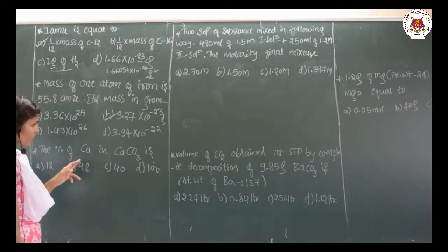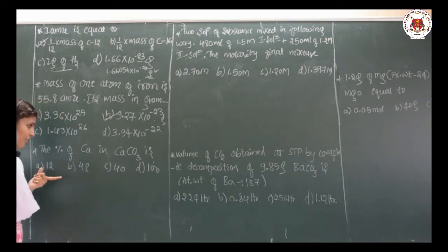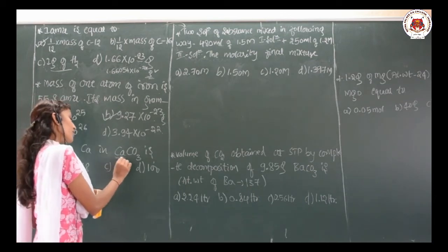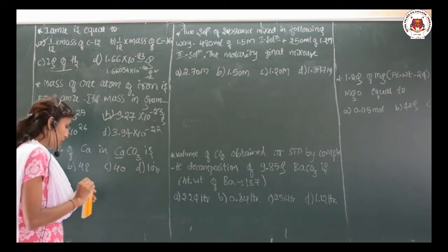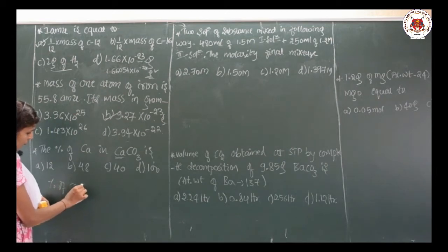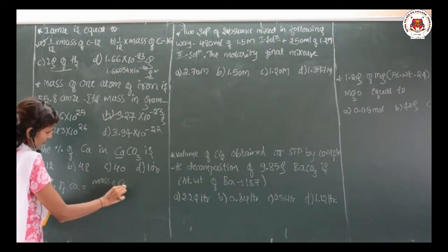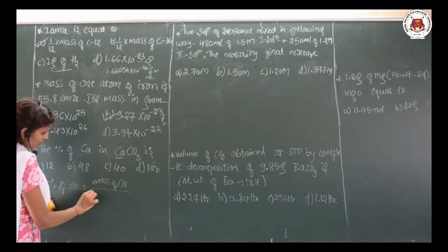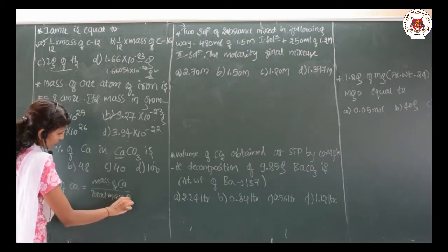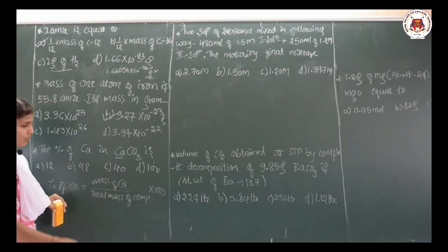The percentage of calcium in calcium carbonate is — this is a question on percentage composition. You need to calculate the percentage of calcium in calcium carbonate. In order to find the percentage of calcium, the formula is: mass of calcium divided by total mass of the compound, multiplied by 100.